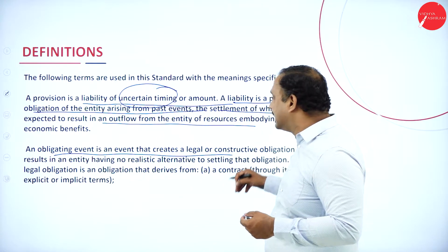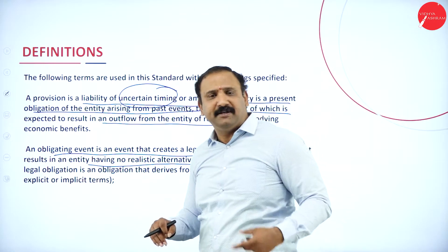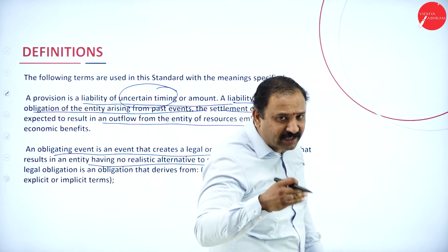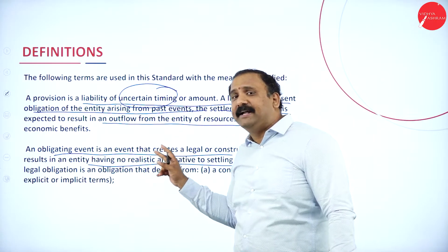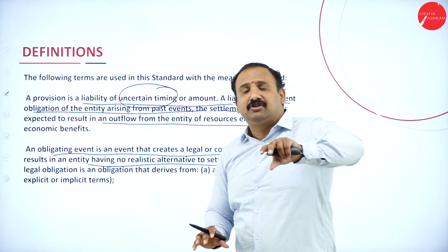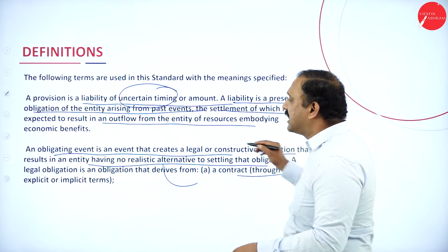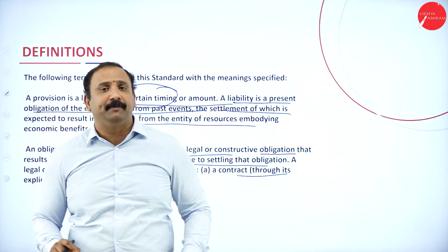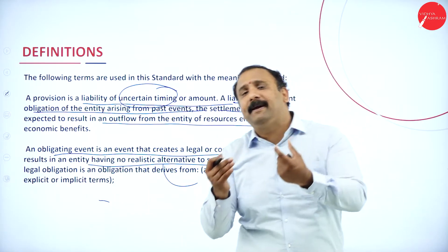An obligating event is an event that creates a legal or constructive obligation that results in an entity having no realistic alternative for settlement. There is a legal binding behind it, and if you do not follow that legal obligation it creates a problem. For example, if a company has taken a loan and it is explicitly mentioned that every month by the 5th the EMI must be settled, that automatically becomes an obligation to repay.